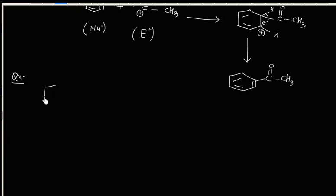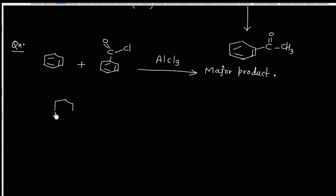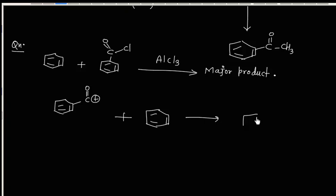Let us try this problem. We have a benzene ring, and this reacts with PhCOCl in the presence of AlCl3 as catalyst. What will be the major product? This is again a Friedel-Crafts acylation reaction, so we will generate the electrophile, which will attack on the benzene ring to give the final substitution product.